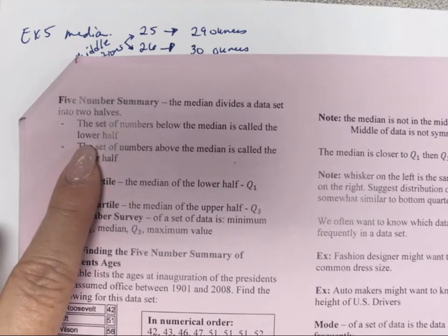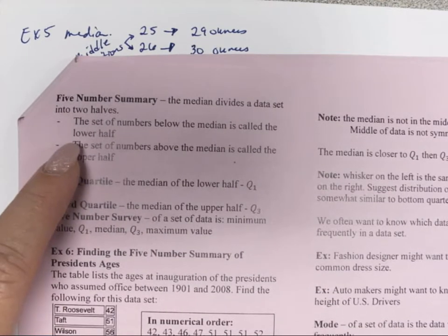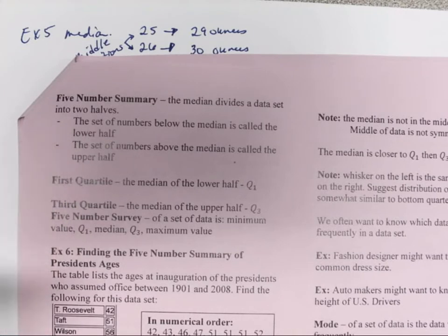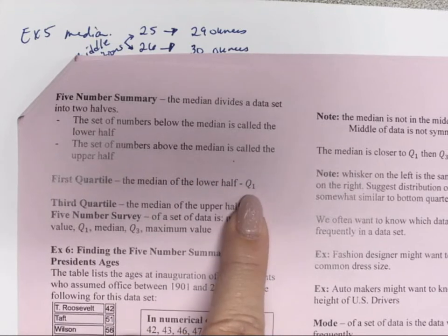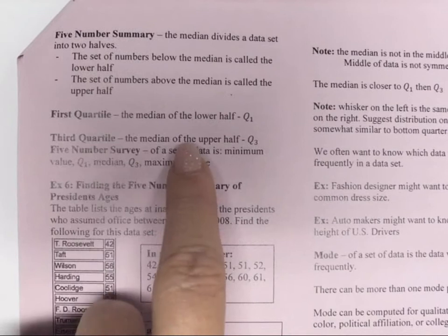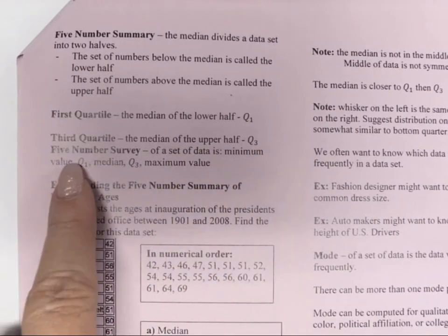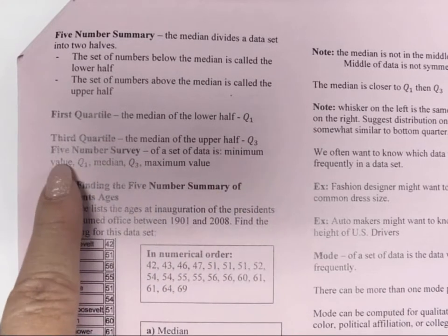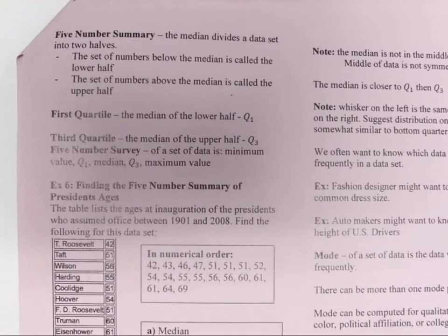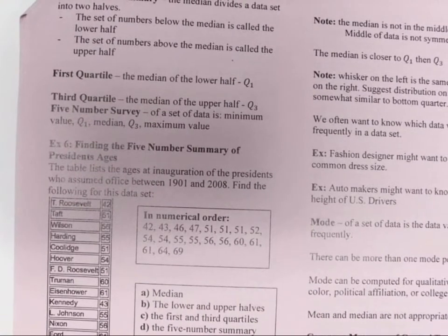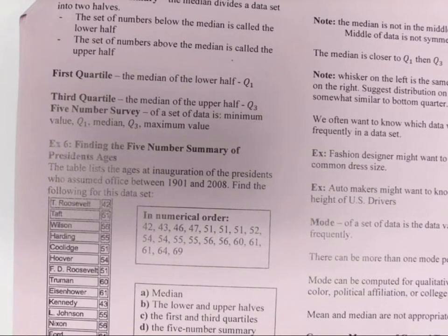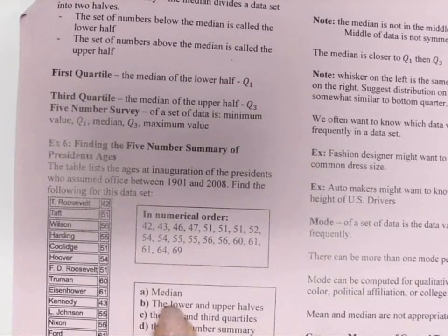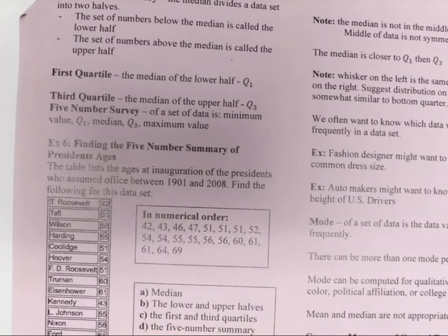Now we're going to learn about a five-number summary. The median divides a data set into two halves, and then the set of numbers below the median is called the lower half, and the set of numbers above the median is called the upper half. The first quartile is the median of the lower half, symbolized as Q1. The third quartile is the median of the upper half, which would be quartile 3. The five-number summary of a set of data has the minimum value, the quartile 1, the median, the quartile 3, and the maximum value.